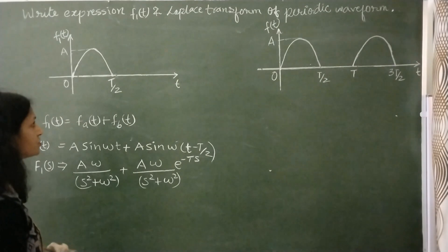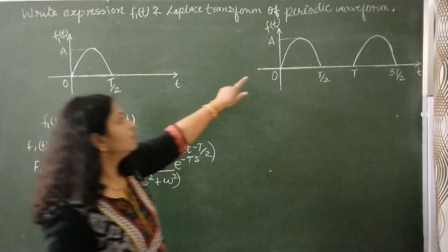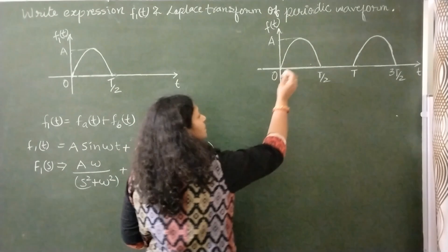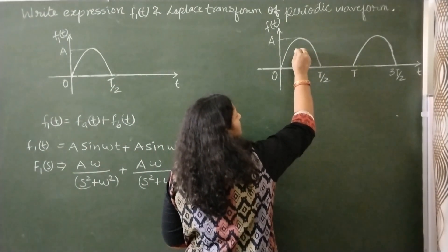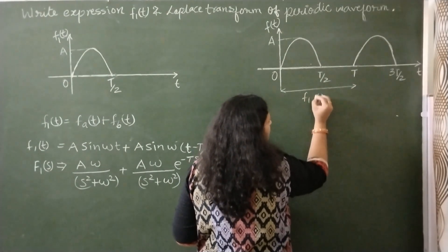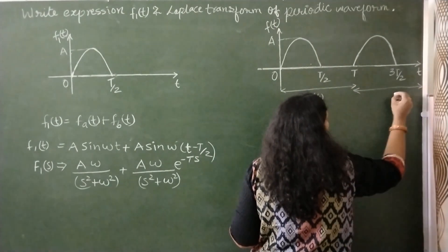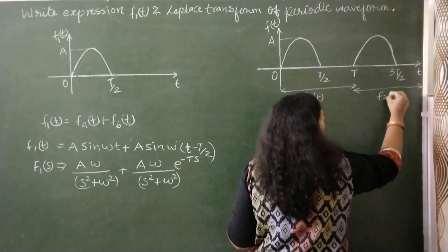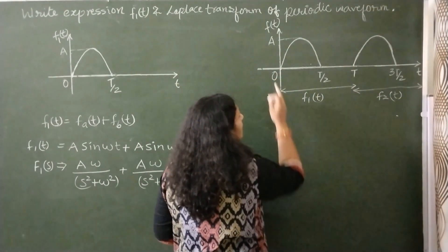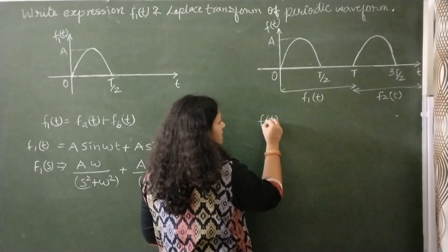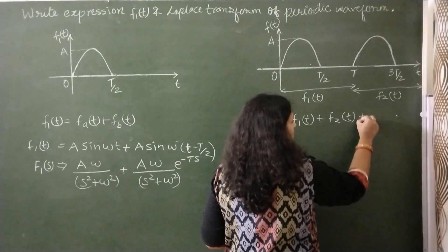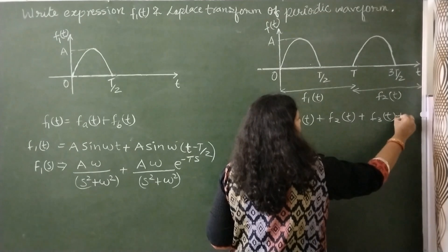Now we can find the Laplace transform of the full periodic function. From 0 to T the periodic function is F1(T), from T to 2T it is F2(T), and so on — there are infinite such components. So we can write F(T) as the summation F1(T) + F2(T) + F3(T) + ...